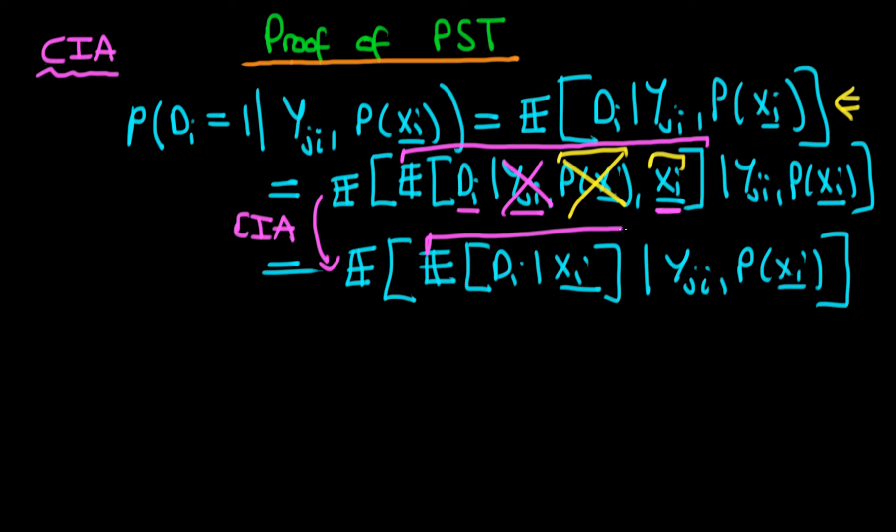Furthermore, we know that this inner expectation here is just equivalent to the probability that di equals 1 given xi, which is just the propensity score. So we can rewrite this whole thing again, which is the expected value of the propensity score, p of xi, given that we're conditioning on yji and p of xi.